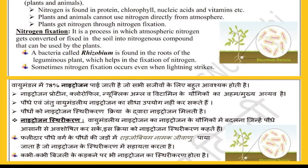There's a new topic today about nitrogen and the nitrogen cycle. There is 78 percent nitrogen in our atmosphere, which is very essential for all living organisms — plants and animals. Nitrogen is found in protein, chlorophyll, nucleic acid, and vitamins. Plants and animals cannot use nitrogen directly from the atmosphere.